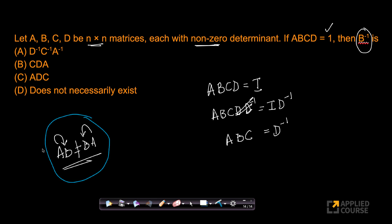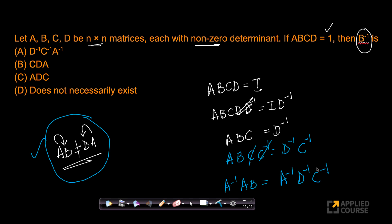Matrix multiplication is not commutative — AB is not equal to BA — so you have to be very careful whether you are post-multiplying or pre-multiplying. Now, post-multiplying both sides by C inverse: C and C inverse cancel out, giving AB equals D inverse C inverse. Then pre-multiplying both sides by A inverse: A inverse A equals identity, so we get B equals A inverse D inverse C inverse.